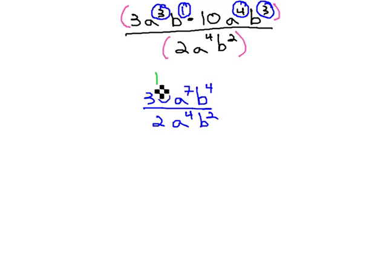We can reduce the 30 over 2 to just 15. For the a's, the quotient rule of exponents tells us to subtract the exponents. We have 7 a's, with 4 of them dividing out, gives us 7 minus 4, or a to the 3rd, left over.